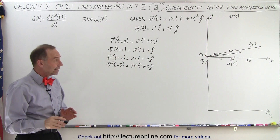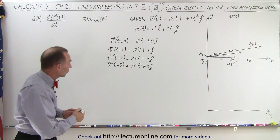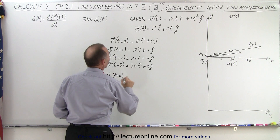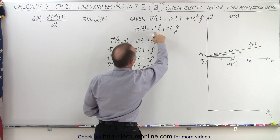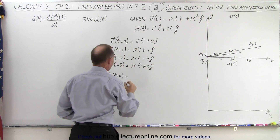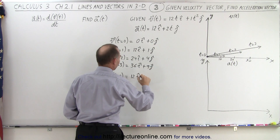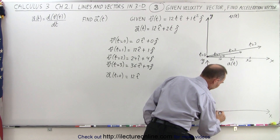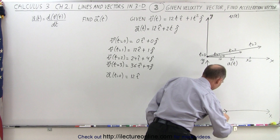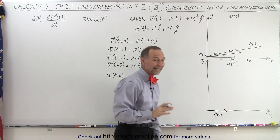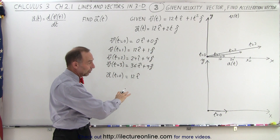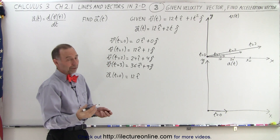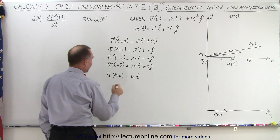Now finding the acceleration vectors with respect to time, starting at t equal to zero. Notice that gives us zero for the j component but 12 for the i component, so we have 12 in the i direction. Right from the start when time is equal to zero we have an acceleration in the x direction — we may have zero velocity at that moment, but there's already an acceleration of 12, presumably meters per second squared.